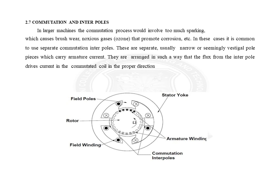These are separate, usually narrow pole pieces, which carry armature current. They are arranged in such a way that the flux from the interpoles drives current in the commutating coil in the proper direction.